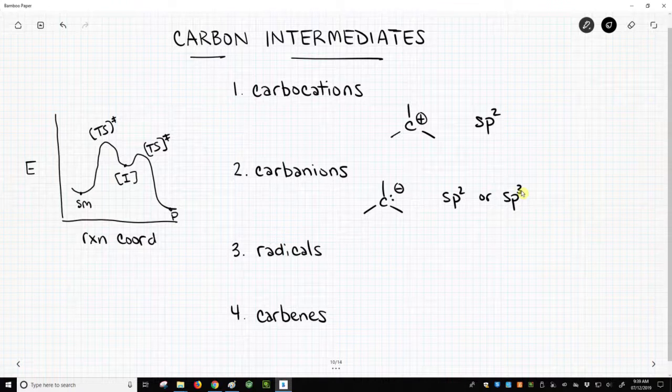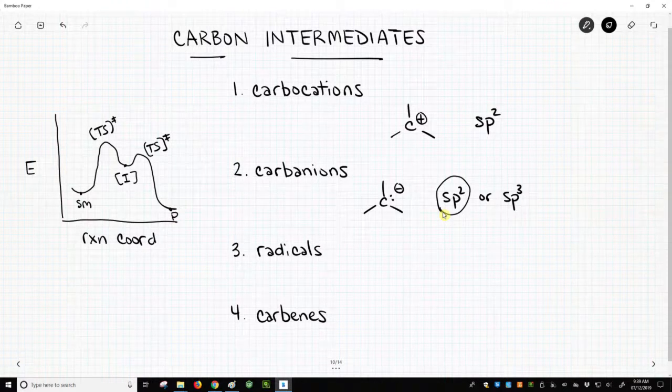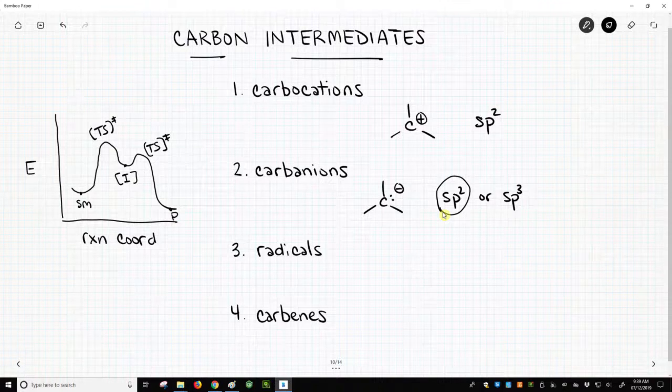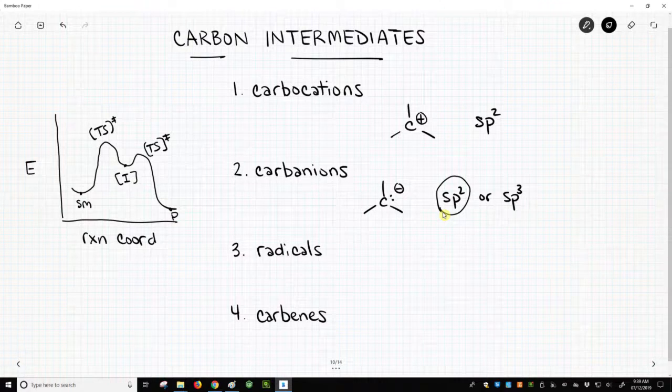The types of carbanions that we encounter normally in introductory organic chemistry are sp2 hybridized, but they can be sp3. Carbanions, if they're sp2, what we're saying is that that lone pair is actually in a p orbital, and it's in a p orbital because it can do resonance to other atoms next door, to pi bonds next door, to delocalize that charge, and that's why we tend to encounter sp2 hybridized carbanions in this course.